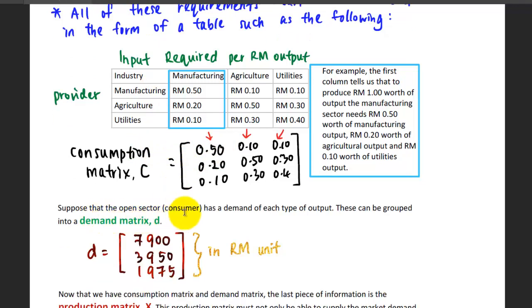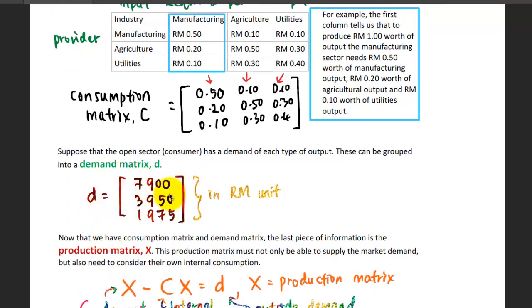Now suppose that the open sector, which is the consumer, has a demand of each type of output. This can be grouped into a demand matrix D. This means that the consumer needs around 7,900 ringgit Malaysia of manufacturing output, maybe 3,950 ringgit Malaysia of agriculture output, and another 1,975 ringgit Malaysia from utilities output.